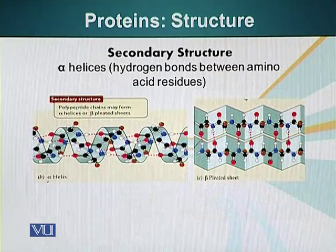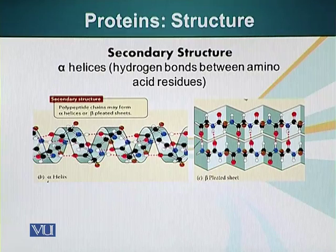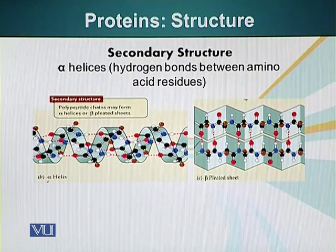This type of bonding is important in the formation of secondary structures. There are two types of secondary structures: alpha helices and beta sheets. Alpha helices are present in fibrous proteins. They result from the formation of hydrogen bonds between the hydrogen atom attached to the nitrogen atom in the peptide bond and the oxygen atom attached to the carbon atom.